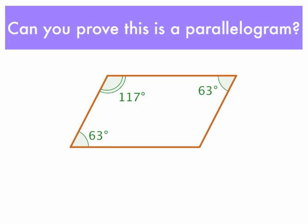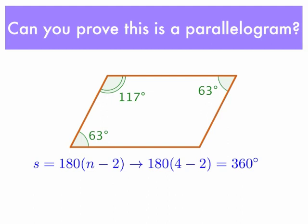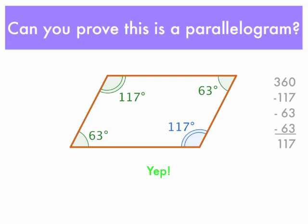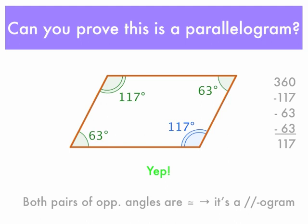What about this figure? We have one pair of opposite angles congruent and another angle of 117 degrees. We're not sure what the fourth angle is. However, in Section 6.1, we found that the sum of the interior angles of a quadrilateral must be 360. So if we subtract 360 minus 117 minus 63 minus 63, we get 117 degrees. Therefore, we can prove that this is a parallelogram, because both pairs of opposite angles are congruent.